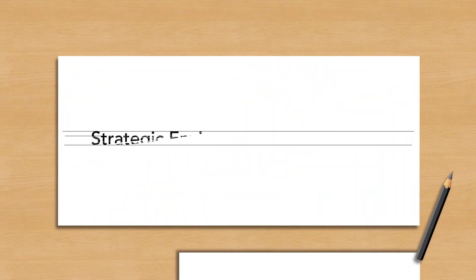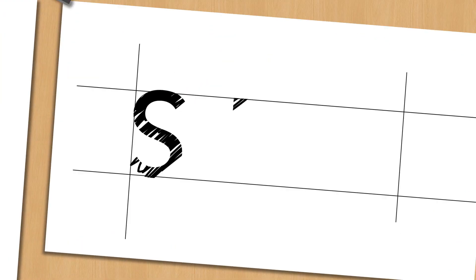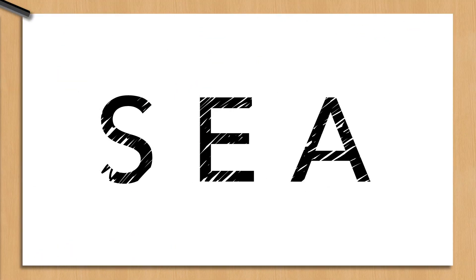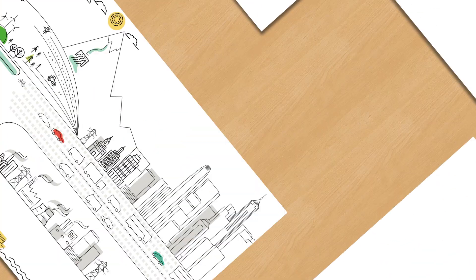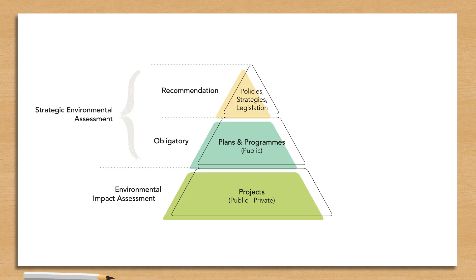To ensure this, many countries apply a regulatory planning tool called Strategic Environmental Assessment, or in short SEA. Compared to Environmental Impact Assessment which applies to individual projects, SEA intervenes much earlier in the decision-making and targets government plans and programs as well as policies and legislation.